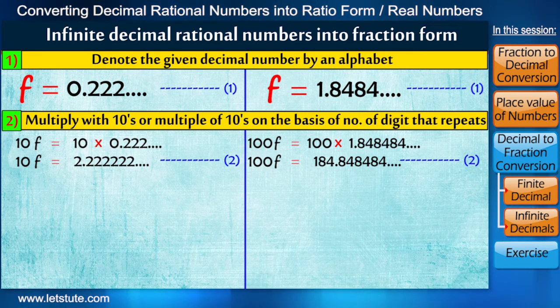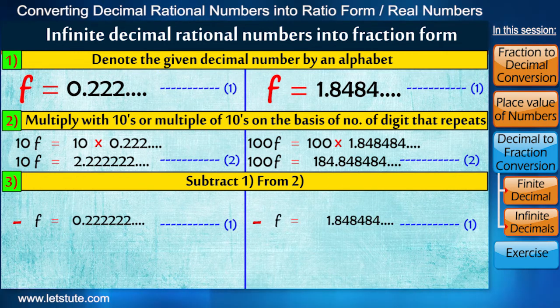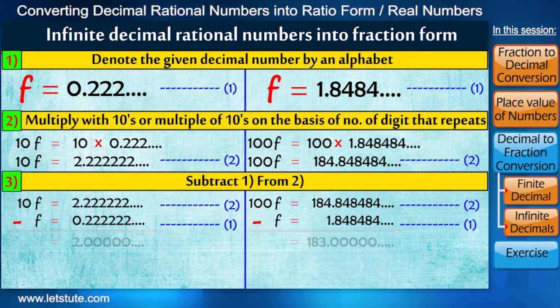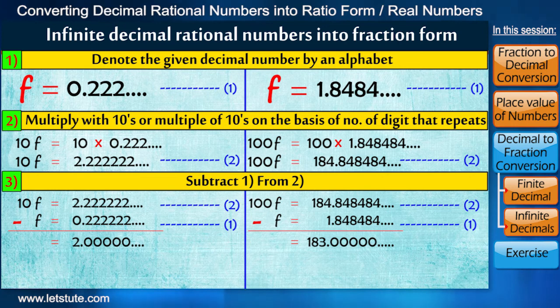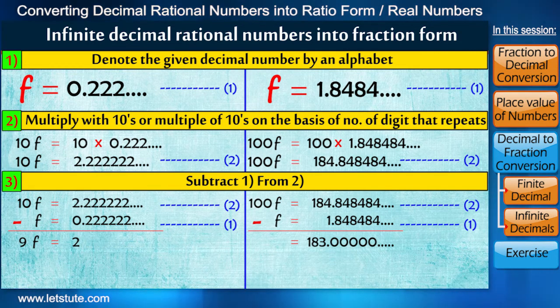And this is our third step where we subtract 1 from 2. And we know that after decimal, if all the digits are zero, then decimal point is removed. And here we simply write 9F is equal to 2, and 99F is equal to 183.